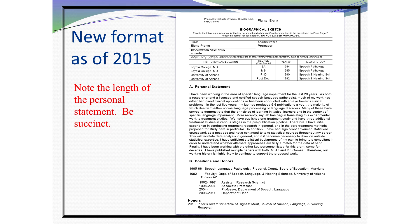All you're supposed to do is tell us why you're the person who should do this work. Here's my biosketch — I've used it for grants that get funded. See how brief it is. I say: here's what I know how to do, I've been working with these people, we've done these past things together, and that's why I can do the work I'm proposing to do. Then there's a section on position and honors that's in the instructions, very clear.